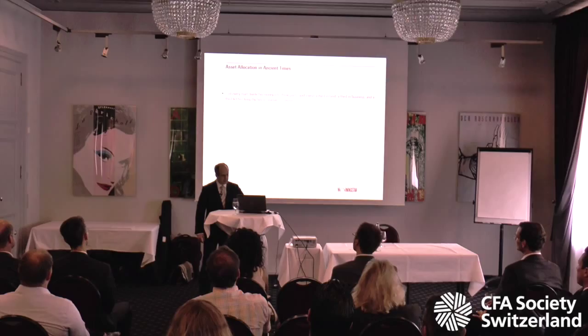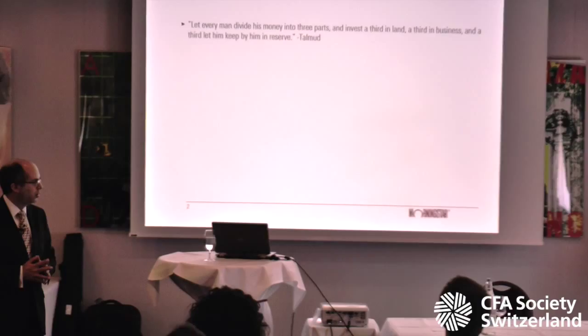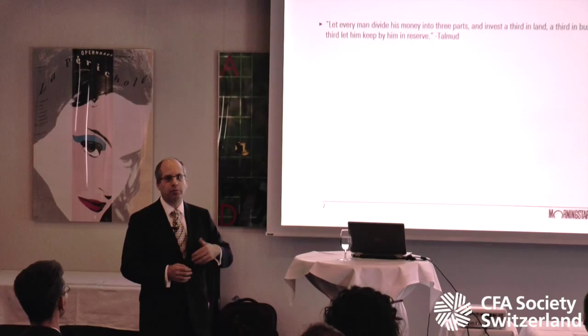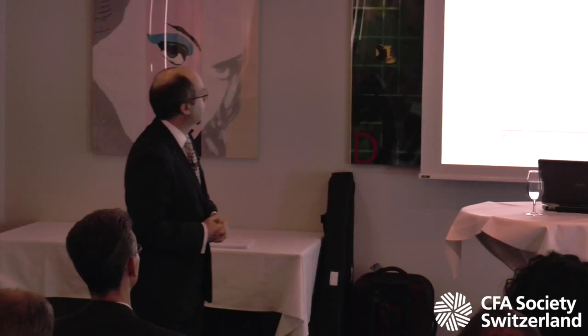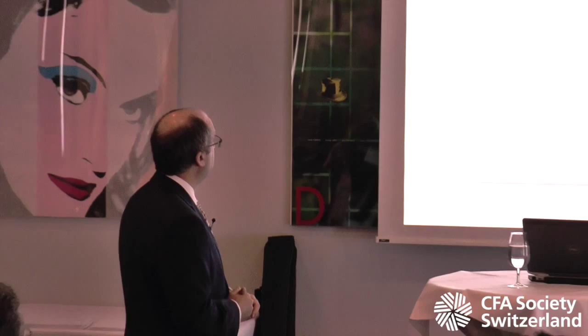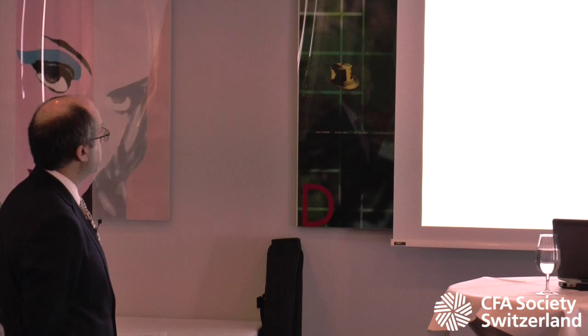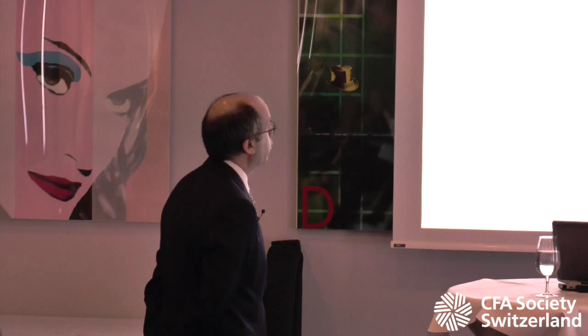The word history is in the title, and I find history very interesting — especially the further back you can go, the more interesting. With asset allocation, we can go back at least 1,500 years to the Jewish Talmud. It might be from the Babylonian Talmud, which would make about 1,500 years, or from the Jerusalem Talmud, which would make it 1,800 years old. Either way, we have this bit of asset allocation wisdom: 'Let every man divide his money into three parts and invest a third in land, a third in business, and a third let him keep by him in reserve.' In modern terminology, we would say hold a portfolio that is one-third real estate, one-third equities, and one-third cash.